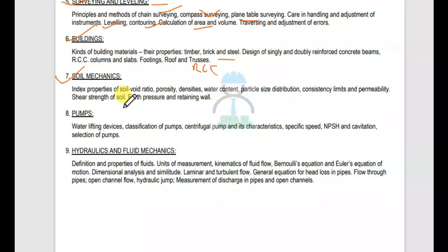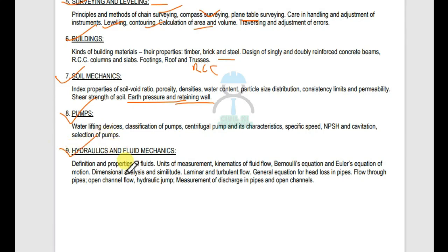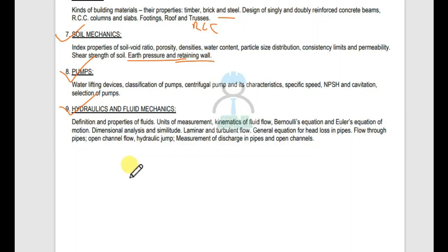Soil mechanics: index properties of soil, void ratio, porosity, density, water content, particle size distribution, consistency limits, shear strength of soil. The next chapter is retaining wall. The next chapter is pumps. The next chapter is hydraulics and fluid mechanics: types and definitions, property measurement, kinematics of fluids, Euler's equation, dimensional analysis and similitude, laminar and turbulent flow, general equation for head losses in pipe, flow through pipe, open channel flow, hydraulic jump, and measurement of flow in pipe and open channel.